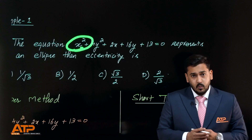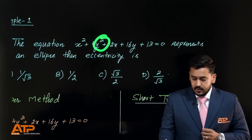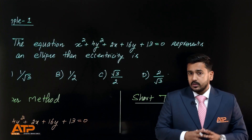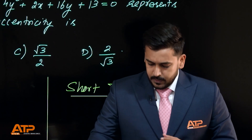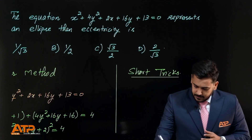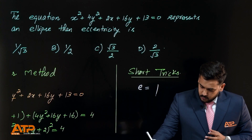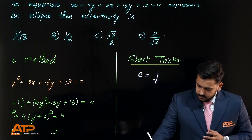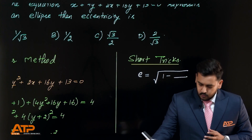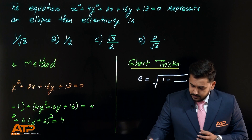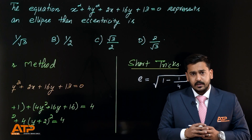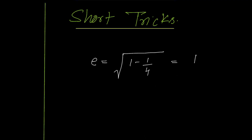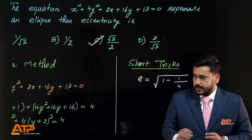The coefficient of x² is 1 and the coefficient of y² is 4. The y² coefficient is larger, so it goes in the denominator and the x² coefficient goes in the numerator. So the answer will be √(3/4) = √3/2 — option C. That's all.